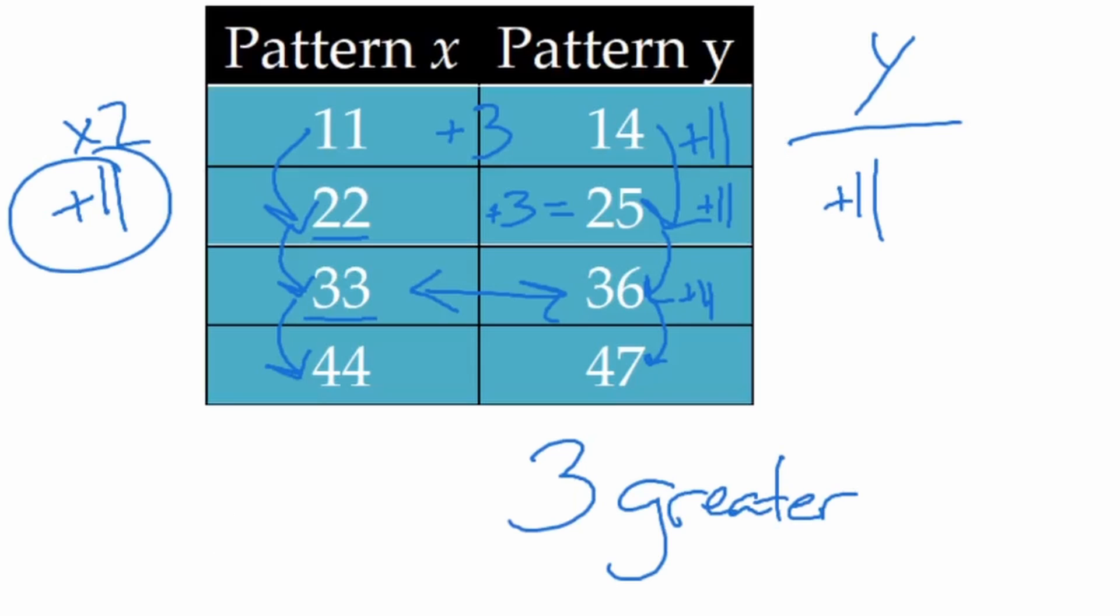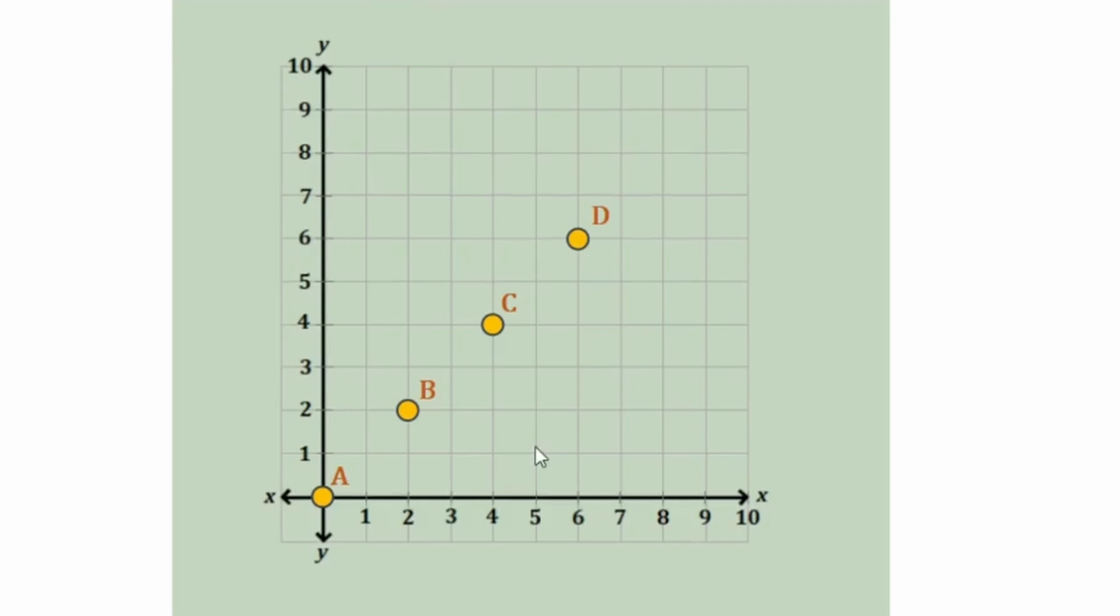Now there's one more thing I want to show you that you're going to need to know to answer questions in this type. It's about the phrase ordered pair. An ordered pair comes from the coordinate plane. So let's take a look at a coordinate plane here. In the coordinate plane, we have an X axis, a Y axis, and each of these lines corresponds to one of those numbers. So the X axis is down here. Each of those lines going upward corresponds to the numbers shown.